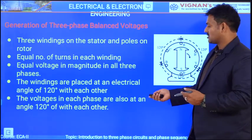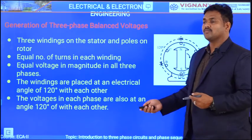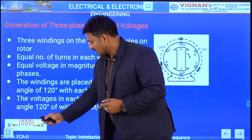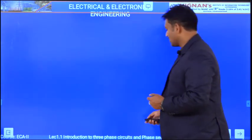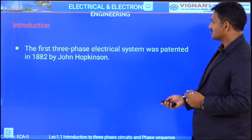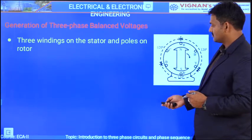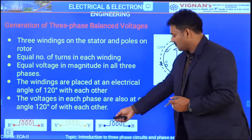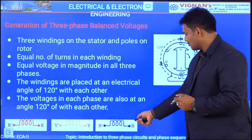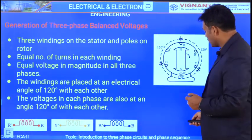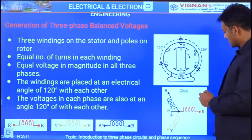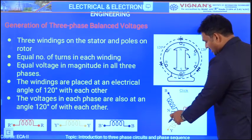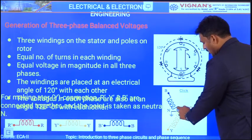There are three windings: winding R with terminals R and R-dash, winding Y with terminals Y and Y-dash, and winding B with terminals B and B-dash. All three terminals B-dash, Y-dash, and R-dash are joined together to form one common terminal connected to the neutral. So all three phase windings share one common terminal.